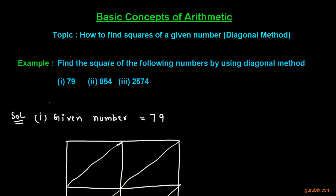Welcome friends. In this video we shall learn a very important method to find the squares of a given number. This method is called the diagonal method and we shall learn this method by an example. We are to find the squares of the following numbers using the diagonal method. The three parts are: part one is 79, part two is 854, and part three is 2574.